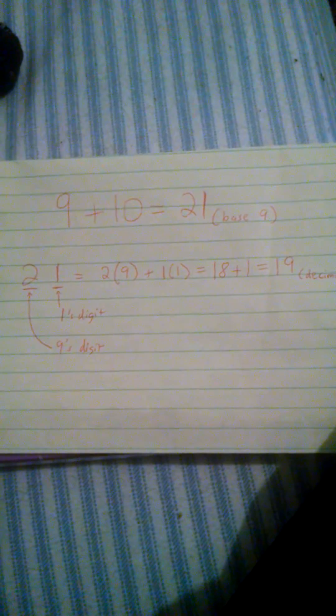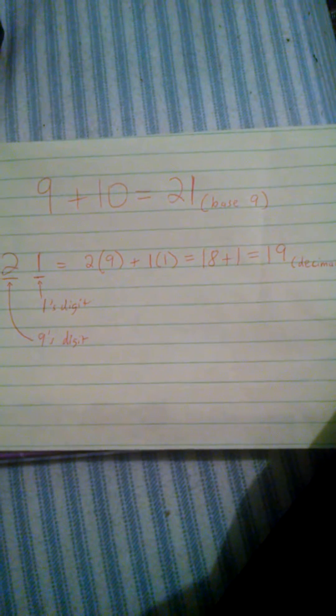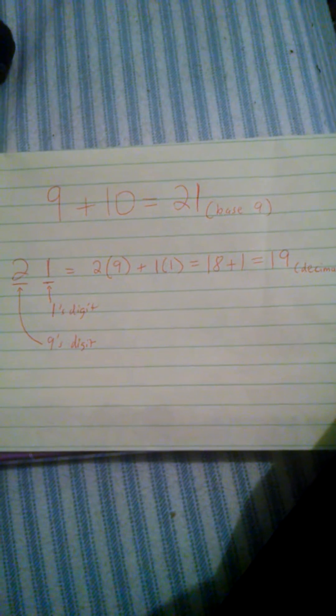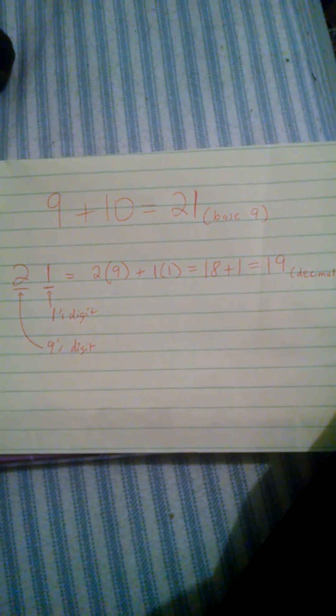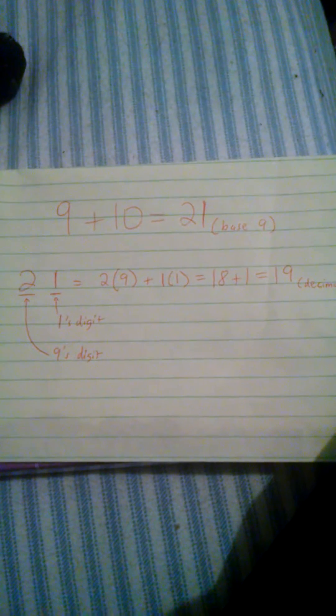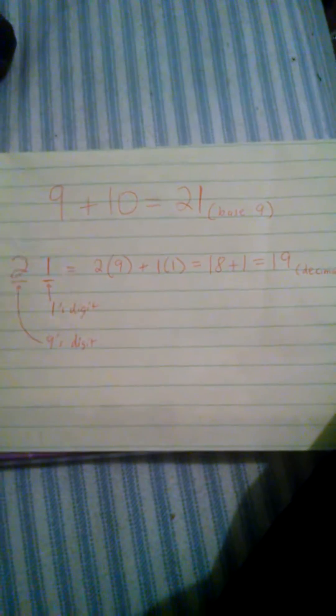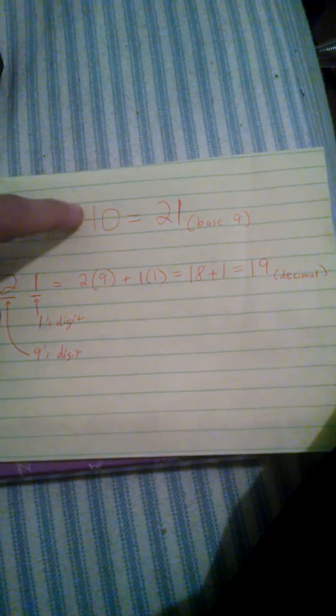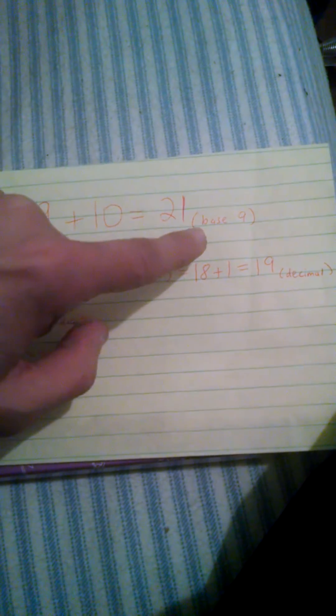Although technically if he had said 21 base 9, he would have been more, it would be easier to believe he was correct. But if you look at the math I did, so I'm saying that 9 plus 10 is 21 in base 9.